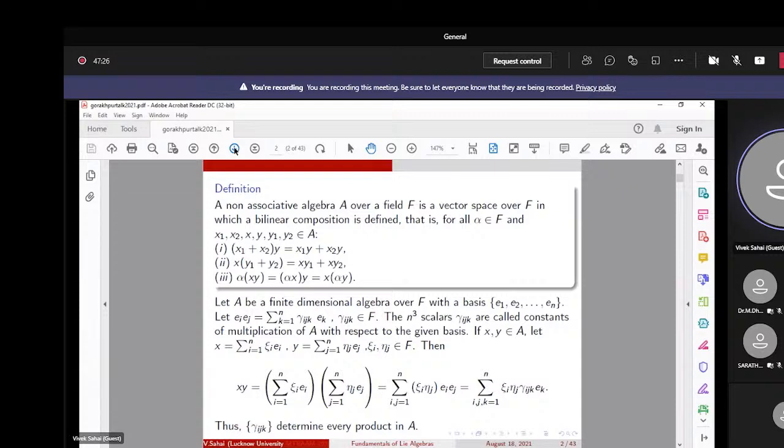We can see that if x and y belong to A, and x = ξᵢeᵢ (i runs from 1 to n) and similarly y = ηⱼeⱼ (ηⱼ is in the field), then x·y can be expressed as a triple sum over i, j, k from 1 to n. Thus these γᵢⱼₖ determine every product in A.